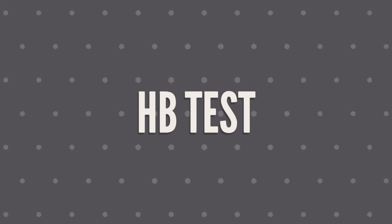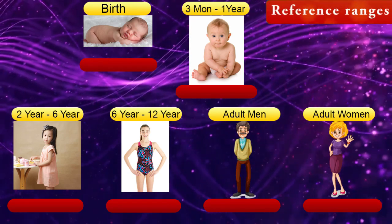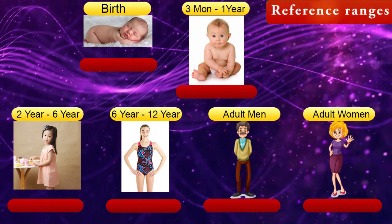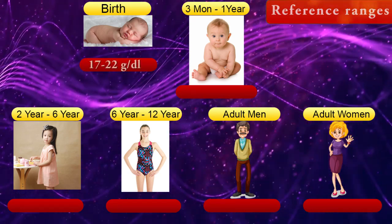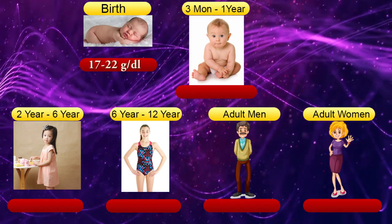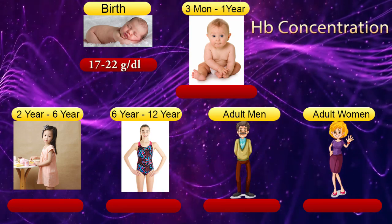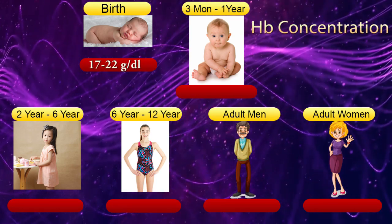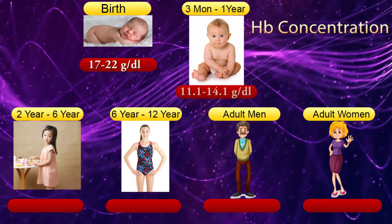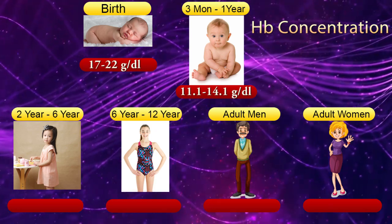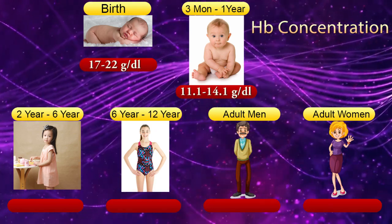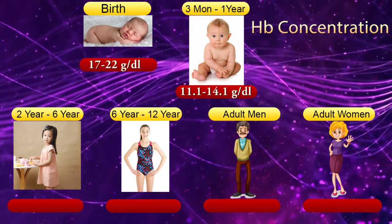Hemoglobin concentration reference ranges. At birth: 14–22 grams per liter. From 3 months to 1 year: 11.1–14.1 grams per liter. From 2 to 6 years: 11–14 grams per liter.